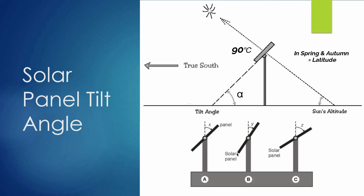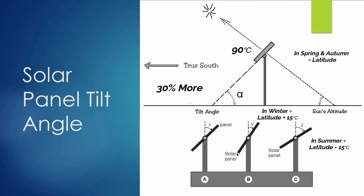We also need to consider the time of year — in winter the sun is much lower on the horizon, and in summer it's very high in the sky. During winter we can increase the angle by 15 degrees, tilting the panel up further to reach 90 degrees to the sun. In summer when the sun is more directly overhead, we can decrease the angle and lay the panel flatter. By tilting your panels you can expect up to 30% more power compared to having them laying flat on the roof of your van.